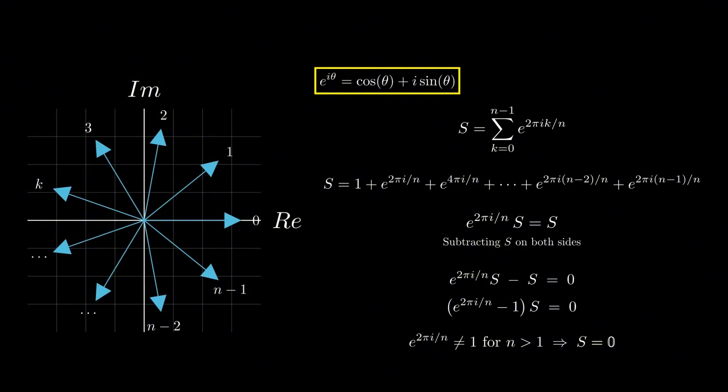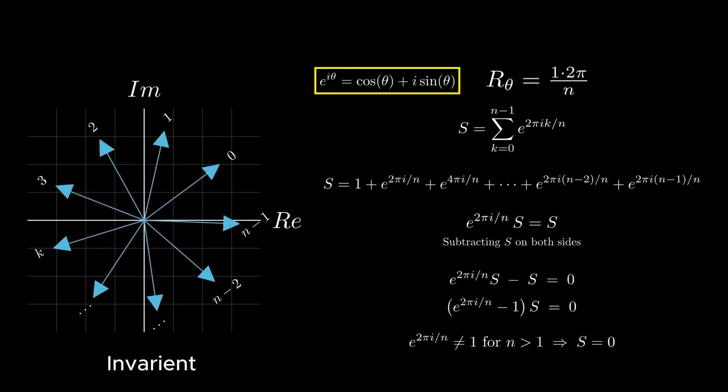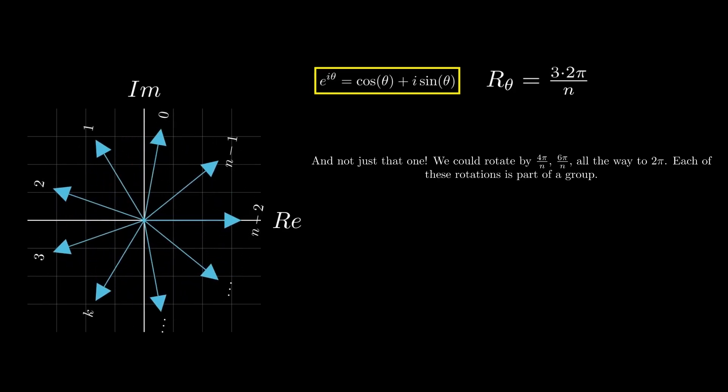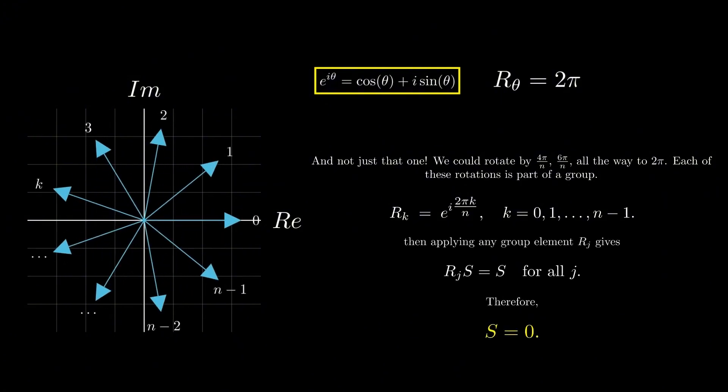In more group theory language, this rotation we applied is called a group action, and our vector sum S is invariant under that action. And not just that one - we could rotate it by 2π/n, 6π/n, all the way up to 2π, and each of these rotations is part of a group. Let's call it R_k. Then applying any group element R_j gives R_j(S) = S for all j, and therefore S = 0.